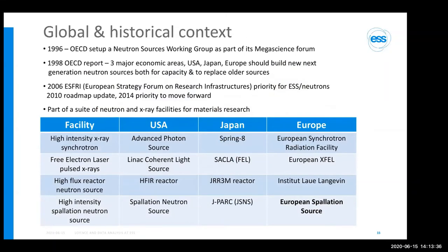In a global context, each major economic area — the US, Japan, and Europe — now has both a spallation source and a high-flux reactor source. There is also a free-electron laser in each: European XFEL recently started in Hamburg, and a high-intensity X-ray synchrotron such as ESRF in Grenoble. So each of these regions has one of each of those tools in their toolbox for materials science.